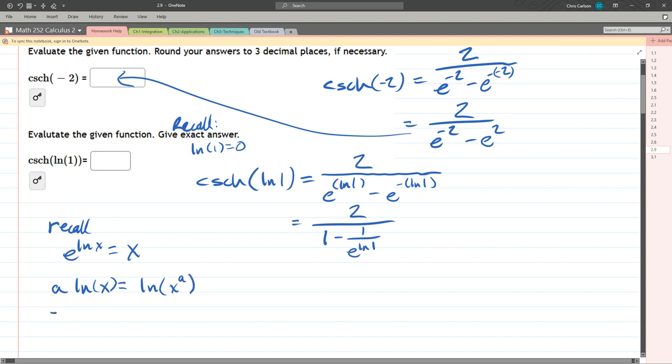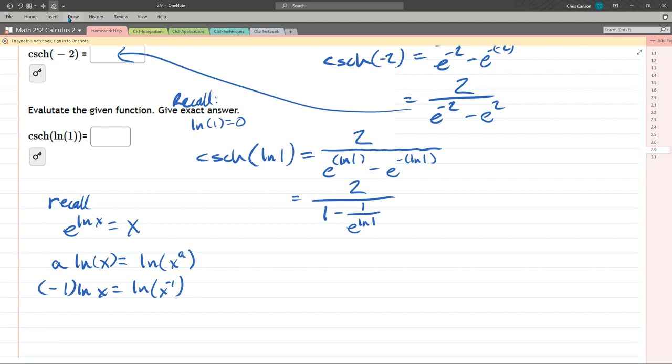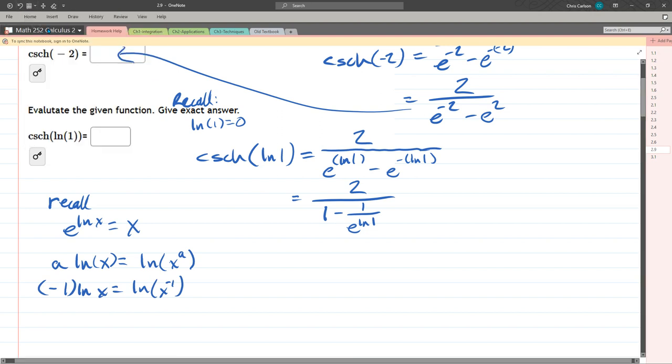I'm probably showing you too many things at once, but we'll just keep going the first way. So this e^ln right here cancels to 1, which of course is 2 over 1 minus 1. Now we have a slight problem.